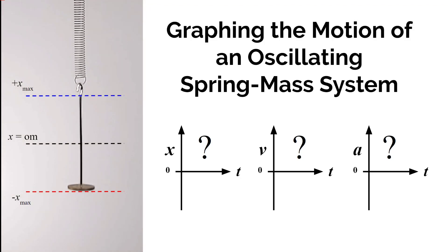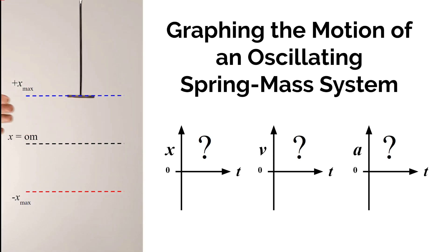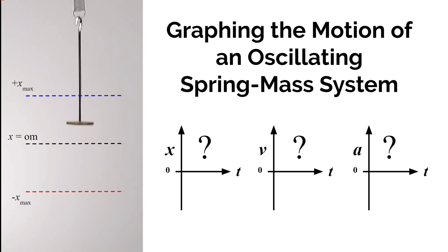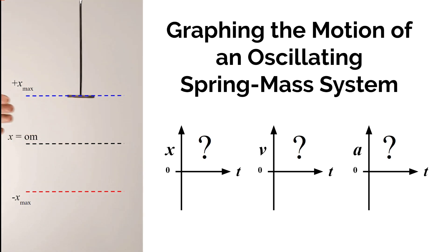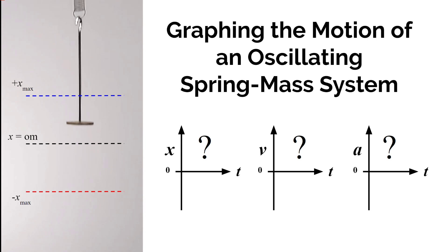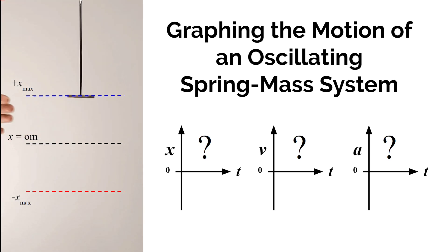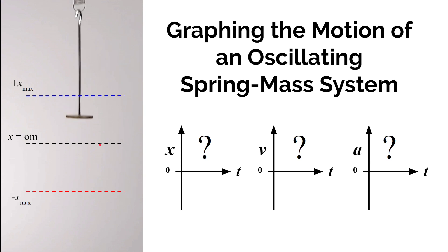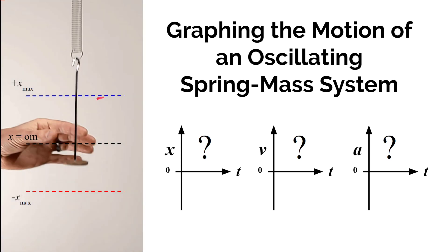Now that we've introduced different types of systems which can oscillate or move back and forth in a regular and repeated way, such as pendulums and spring mass systems, we're going to talk about how we can graph how position changes over time, velocity changes over time, acceleration changes over time, and eventually by the end of the video, we're going to talk about what happens to the energy or graphing how the energy changes over time. We're specifically going to look at a vertical spring mass system that's oscillating about an equilibrium position and moving to some negative displacement and some positive maximum displacement.